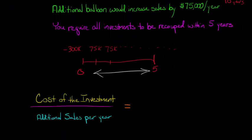So what we can do is just say, okay, well, let's just take the cost of the investment, which is going to be $300,000. That's the cost of the balloon. Now we take that, and we divide it by the incremental sales that we're experiencing each year. So our annual increase in sales is $75,000. So we divide $300,000 by $75,000, and that is going to give us four.